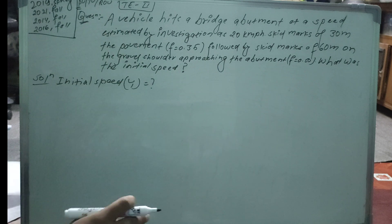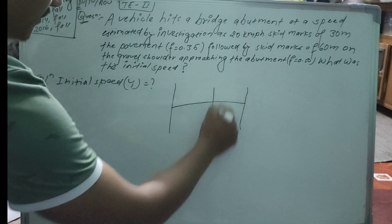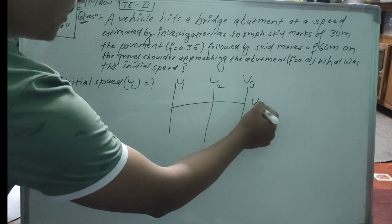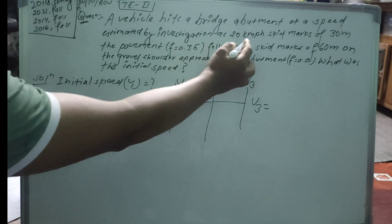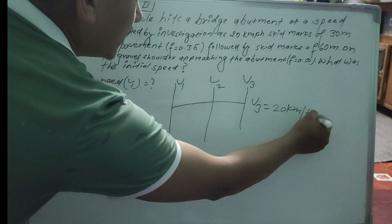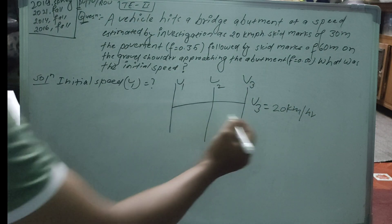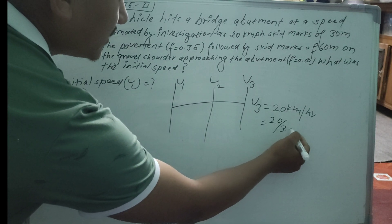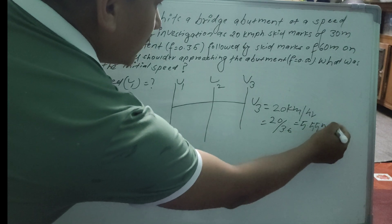The speed at the abutment is given as 20 km per hour. We have to convert kilometers per hour into meters per second, so we divide by 3.6. 20 divided by 3.6 gives us 5.55 meters per second.